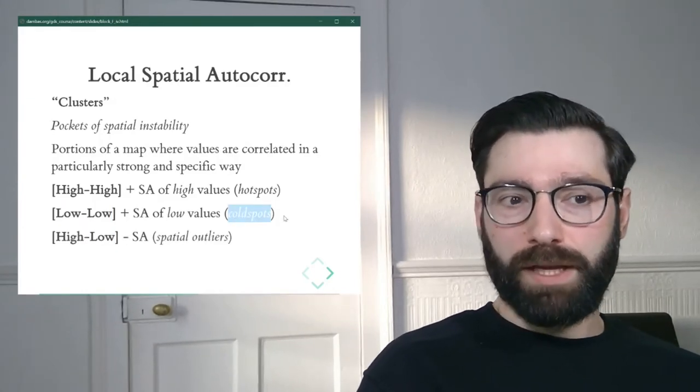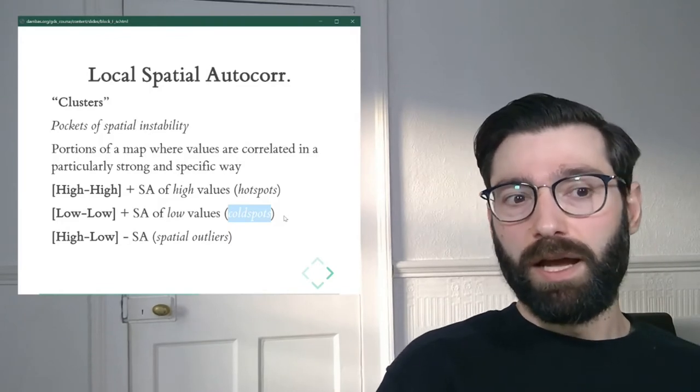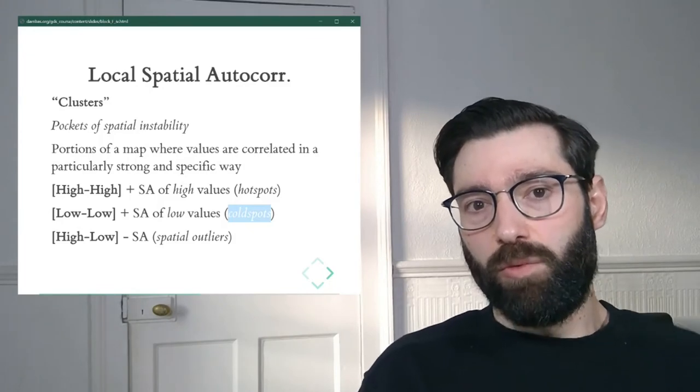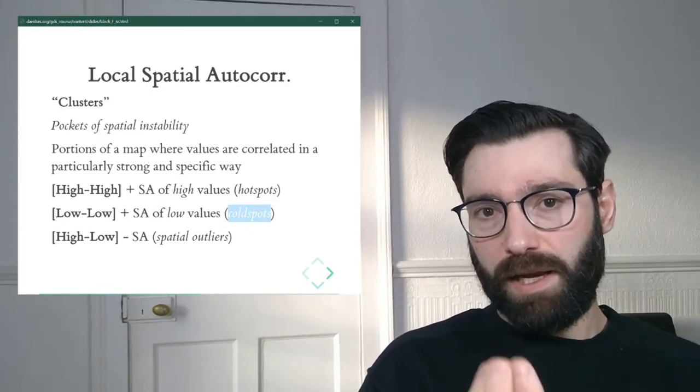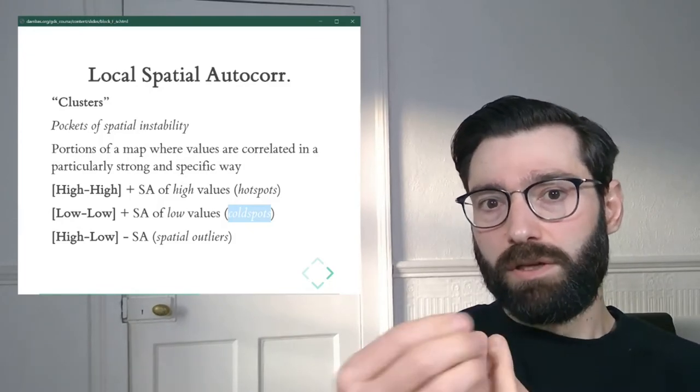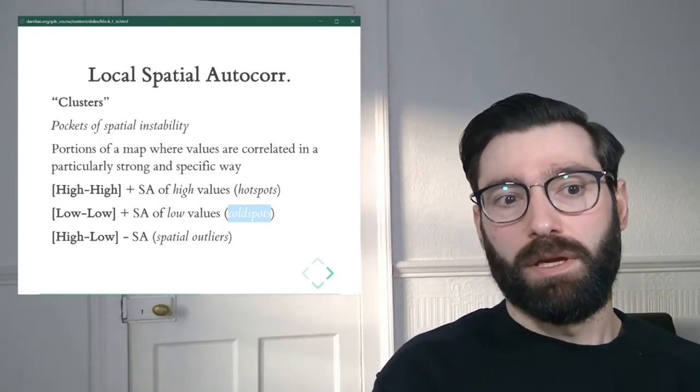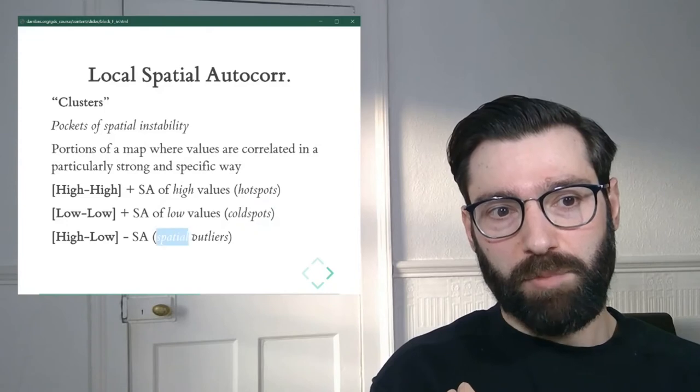Then the other case we can find is what we will call high-low. And this is areas of the map where you have an area, a section that is high value, of high values, surrounded by low values. And we will call these spatial outliers.